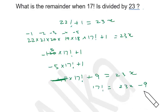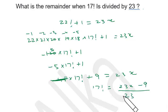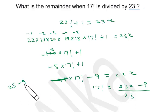When 17 factorial is divided by 23, we write it as: multiple of 23 minus 9. Dividing this by 23, the remainder is minus 9. If the remainder is negative, subtract it from the divisor: 23 minus 9 equals 14. So the remainder when 17 factorial is divided by 23 is 14.